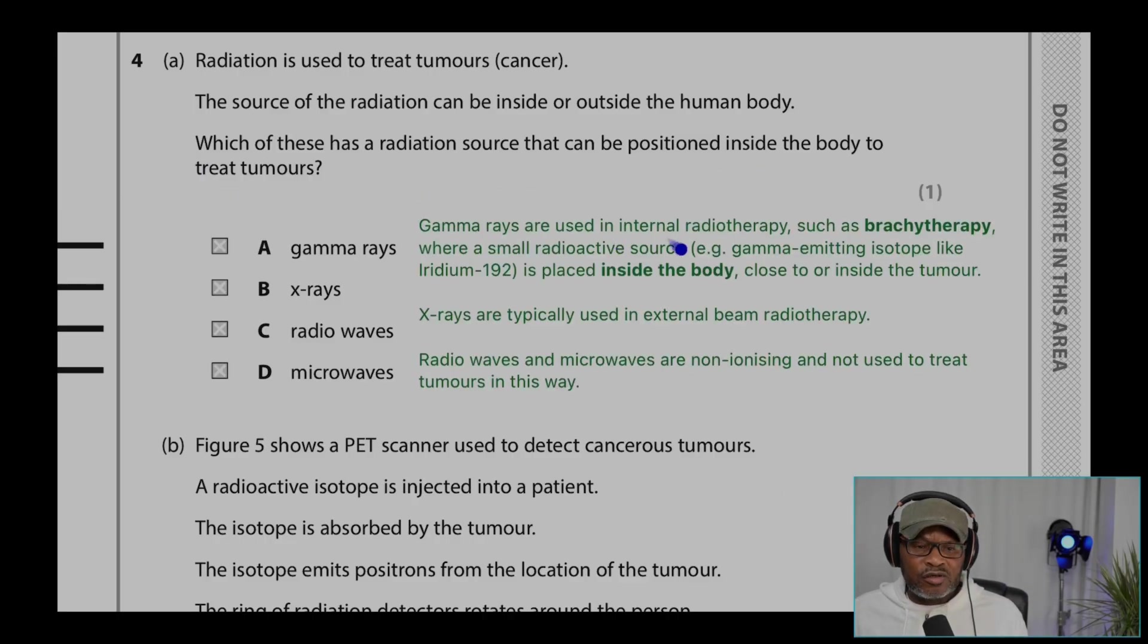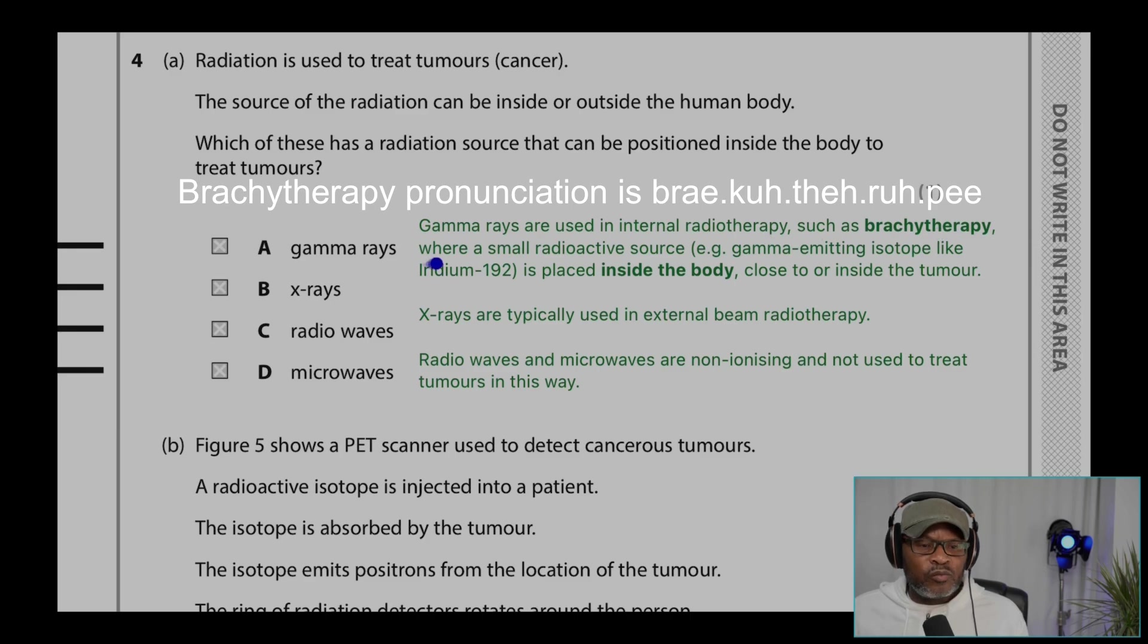Gamma rays are used in internal radiotherapy such as brachytherapy, where a small radioactive source such as gamma-emitting isotope like iridium-192 is placed inside the body, close to or inside the tumor.